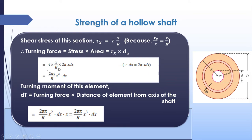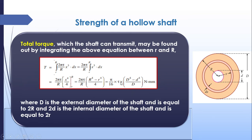The shear stress tau_x = tau·x / R. Force equals stress times area: 2·pi·tau / R · x²·dx. The turning moment is 2·pi·tau / R · x³·dx. For the total torque, we integrate from the inner radius r to the outer radius R (not 0, because there is a hole). The result is T = (pi / 16) · tau · (D⁴ − d⁴) / D, where D is the outer diameter, d is the inner diameter, and tau is the maximum surface shear stress.